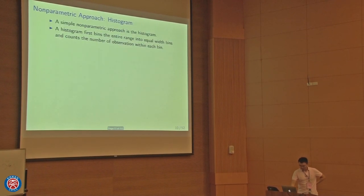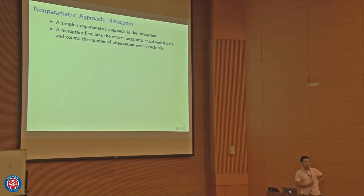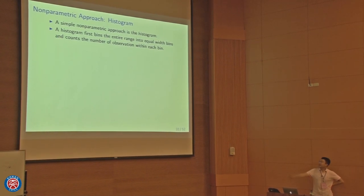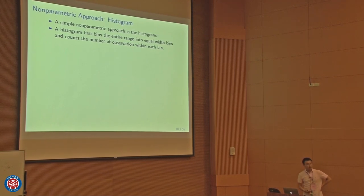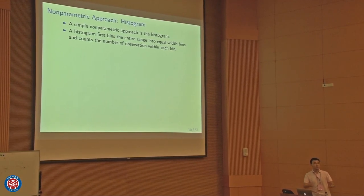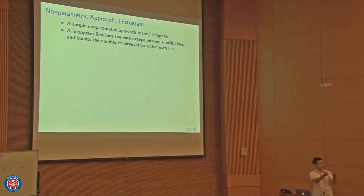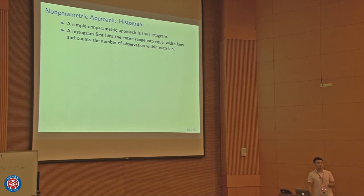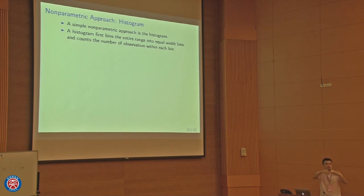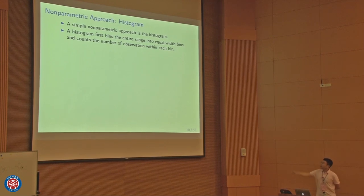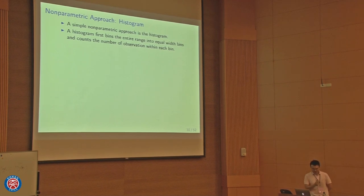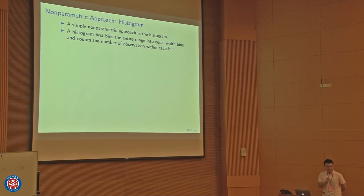The non-parametric method is very powerful because we do not make such restrictive assumptions. Many of you have already seen one non-parametric method: the histogram. In the histogram, we do not assume it's a Gaussian or any parametric form. We directly use the observed data, bin the range, and count the observations in each bin to get a shape of the distribution.